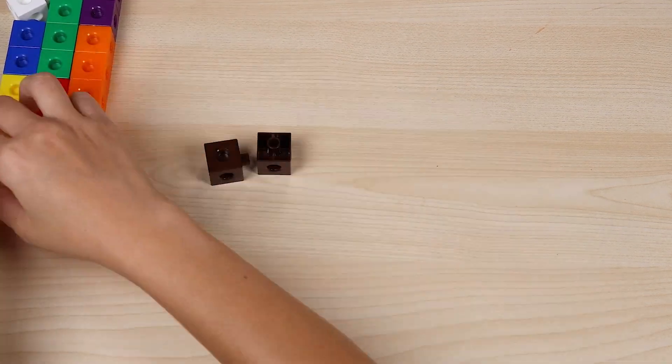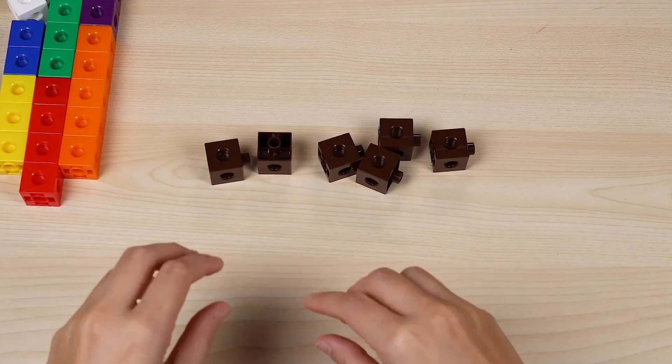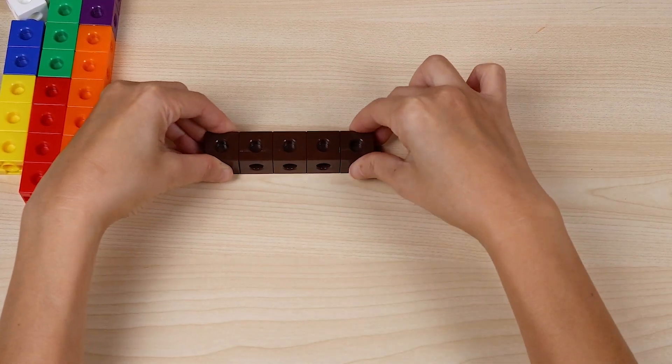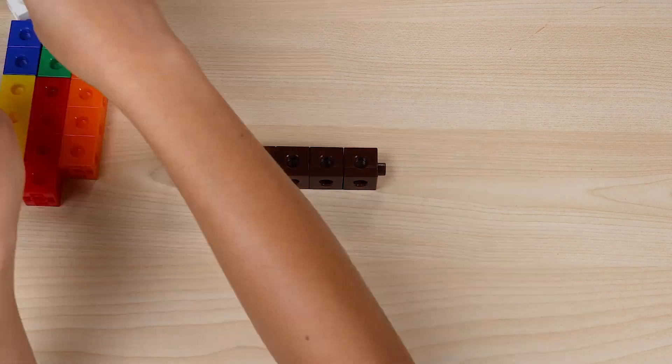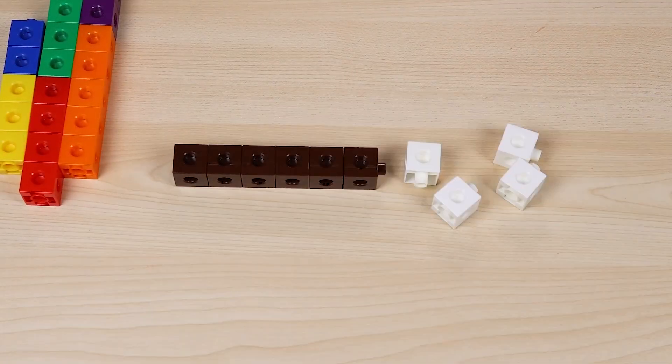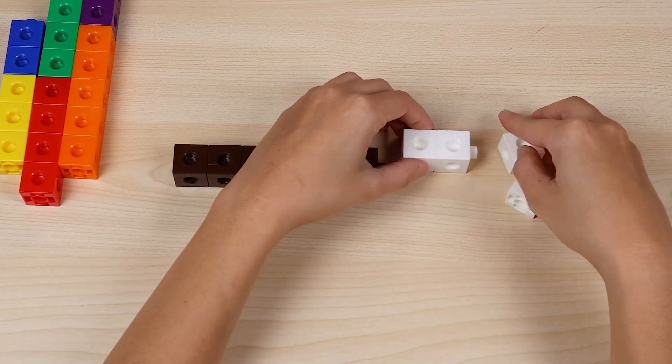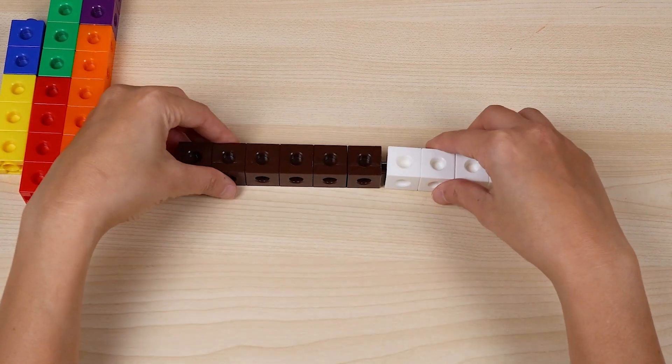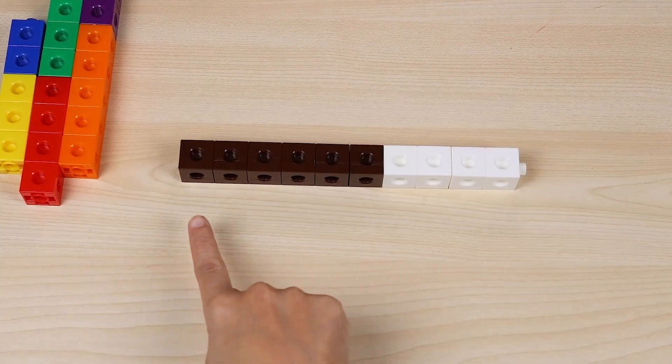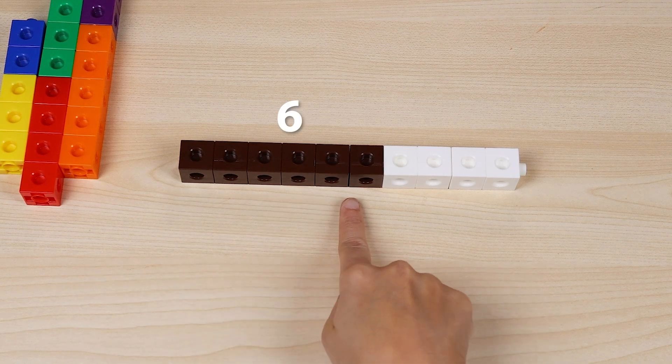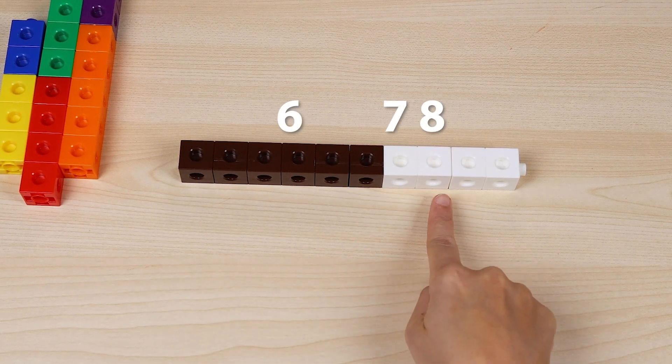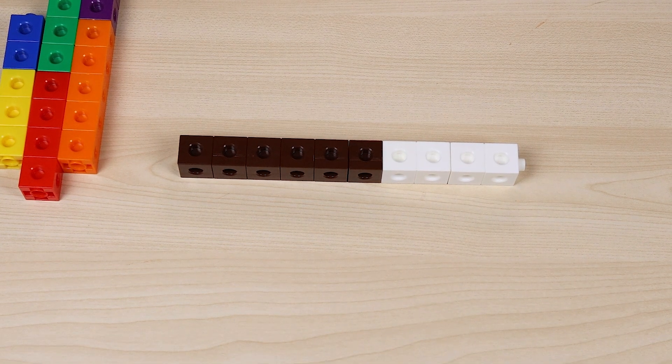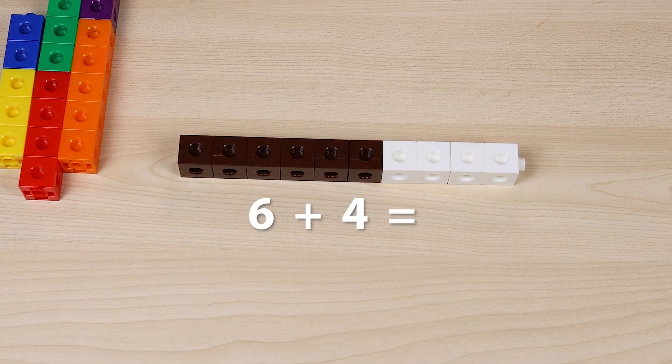We have six brown cubes and we're adding four white cubes. Let's start with six, then count on seven, eight, nine, ten. So, six plus four makes ten.